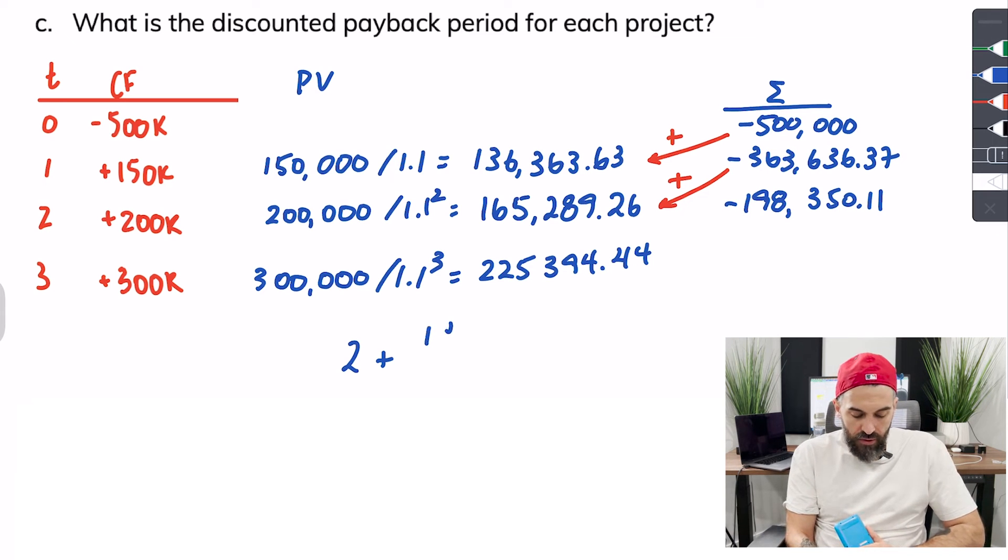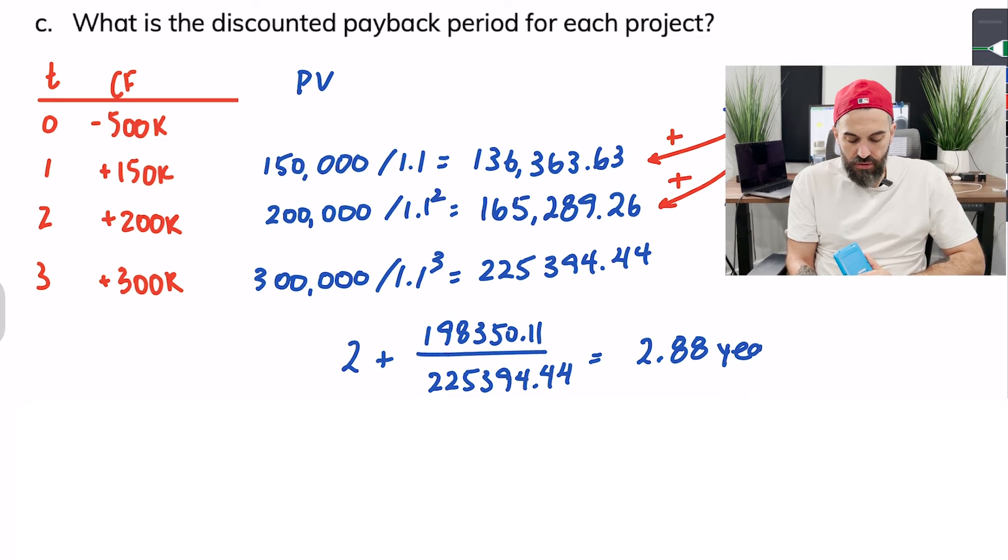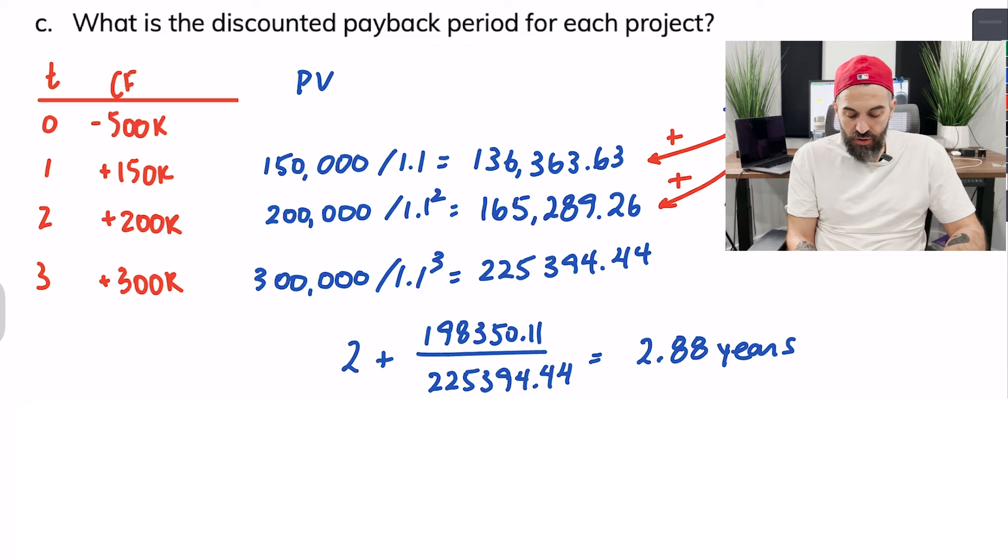So the discounted payback period is two years because we need the first two years in full plus a fraction of the third year and that fraction is what we're missing, $198,350.11 divided by what we're expecting which is $225,394.44, so you get a payback period of 2.88 years.